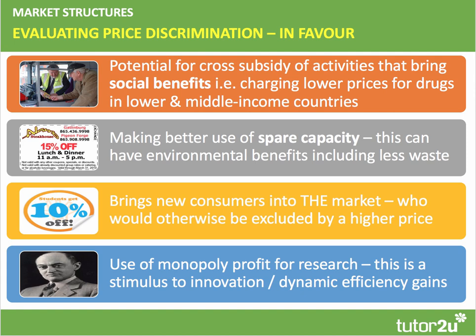A second argument is that dynamic pricing is a good way of making more efficient use of spare capacity. Businesses might cut the price of food after it passes its best-before date — the Co-op has announced a plan to sell products for 10p after their best-before date, which environmentalists argue reduces waste and brings social benefit. Crucially, price discrimination allows businesses to bring new consumers into the market who would otherwise be priced out — this is particularly important in education, healthcare, and products of high consumer need.